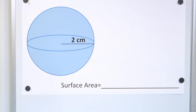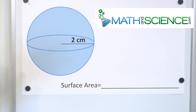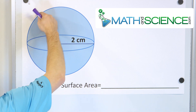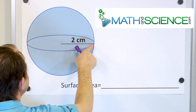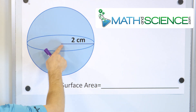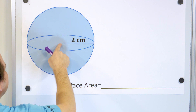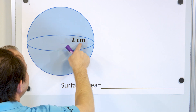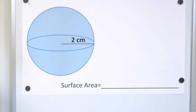Here is what a sphere looks like drawn on a two-dimensional shape. It looks like a circle, but then we have a circular diameter here, and we're given that the radius from the center of the sphere to the edge is two centimeters.